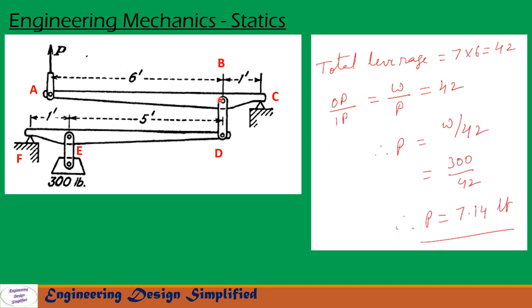Now, total leverage of this compound lever or double lever can be written as the multiplication of two individual leverages, that is 7 times 6, which equals 42.